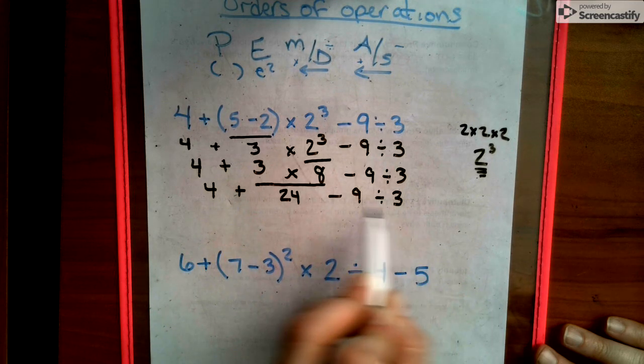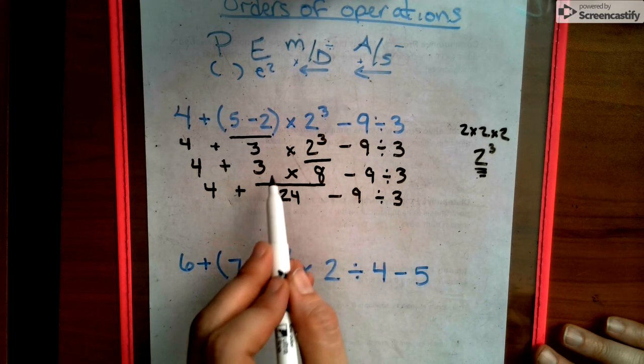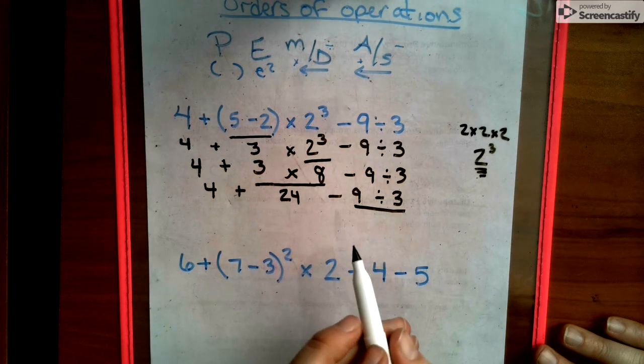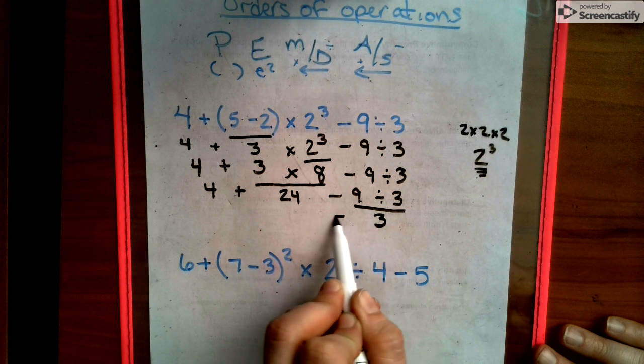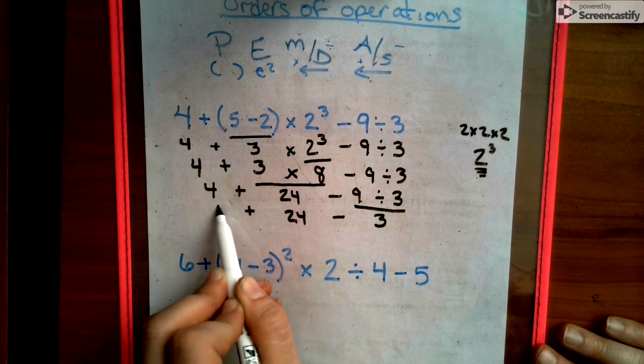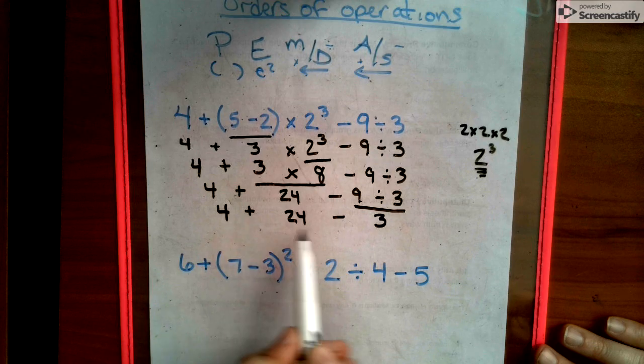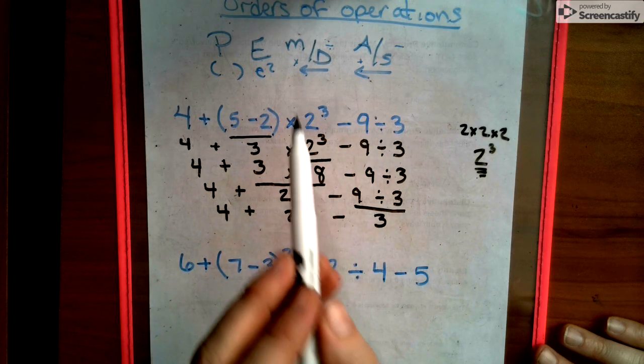And then we ask ourselves in this next line, is there more? And yes, we established that there was some division. So we do 9 divided by 3 next, which gives us 3. We write down everything else we did not touch. And then we say, hey, is there any more multiplication or division? No.